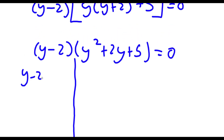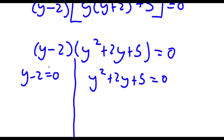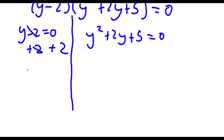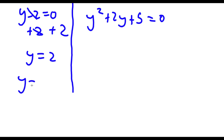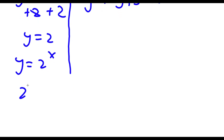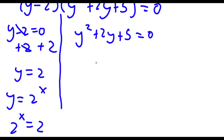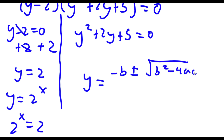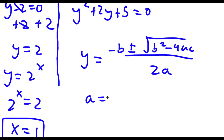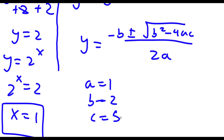This gives two equations: y minus 2 equals 0 and y squared plus 2y plus 5 equals 0. For y minus 2 equals 0, adding 2 gives y equals 2. Since y equals 2 to the power of x, we have 2 to the power of x equals 2, so x equals 1. For y squared plus 2y plus 5, using the quadratic formula with a equals 1, b equals 2, c equals 5: the discriminant is 4 minus 4 times 1 times 5, which is 4 minus 20, giving the square root of negative 16. This is negative, so there are no real solutions, and my only solution is x equals 1.